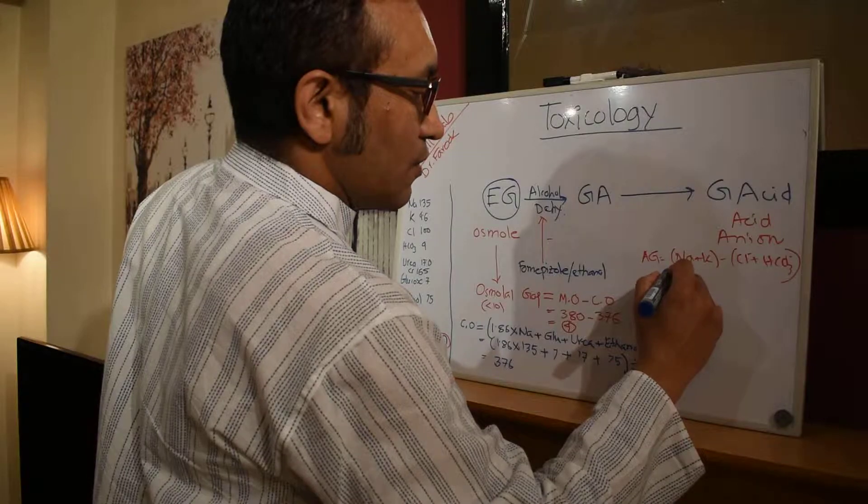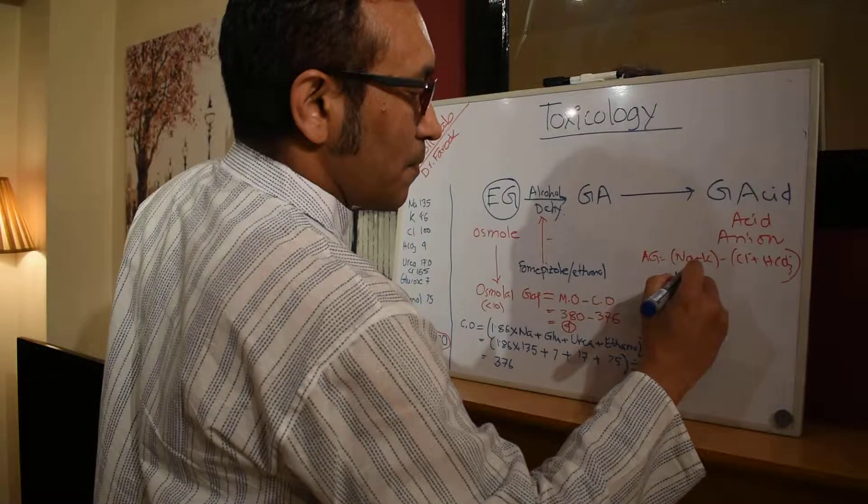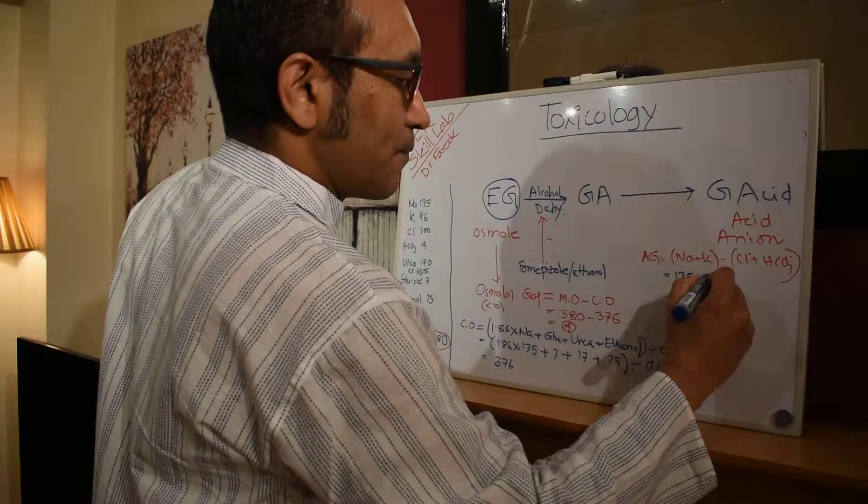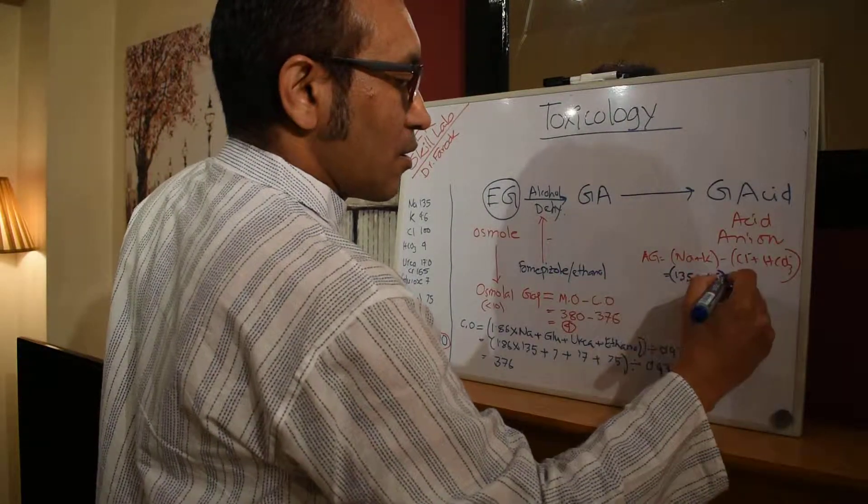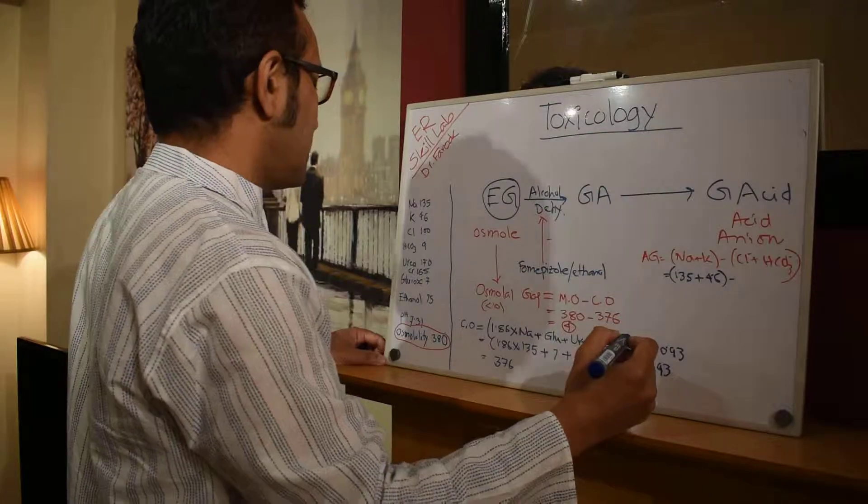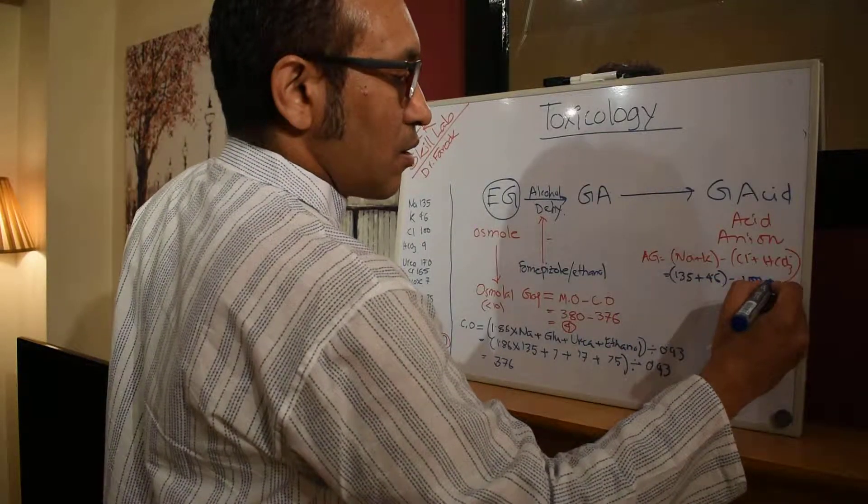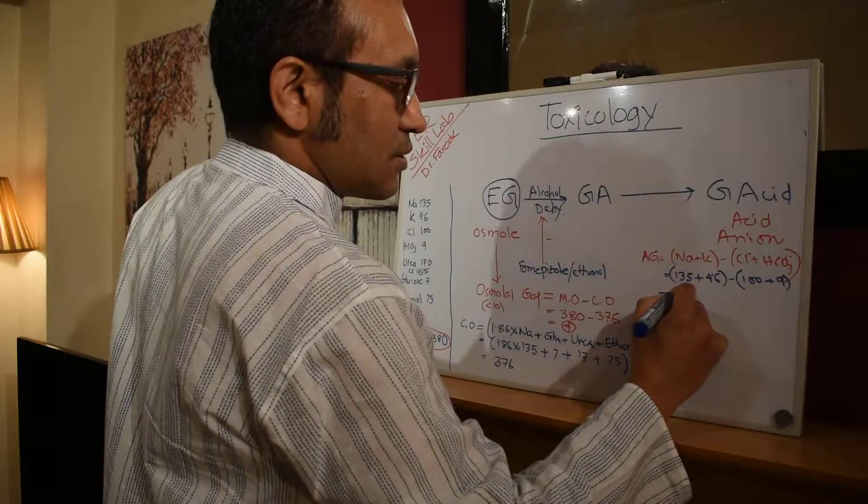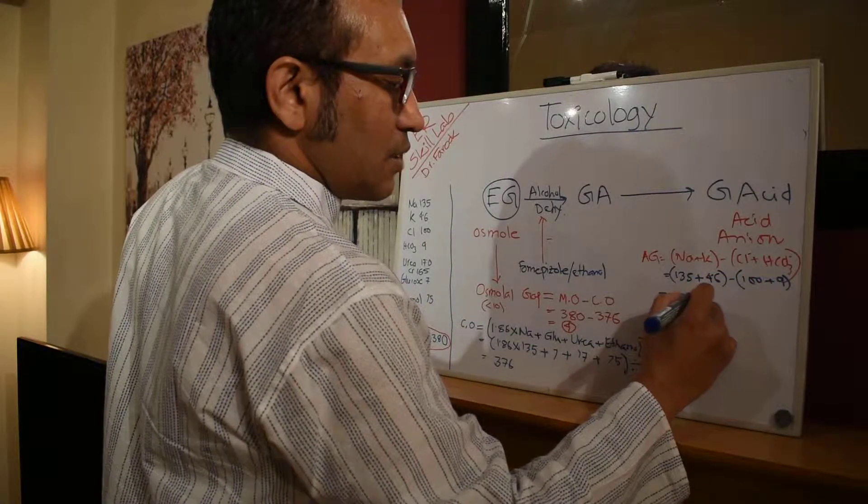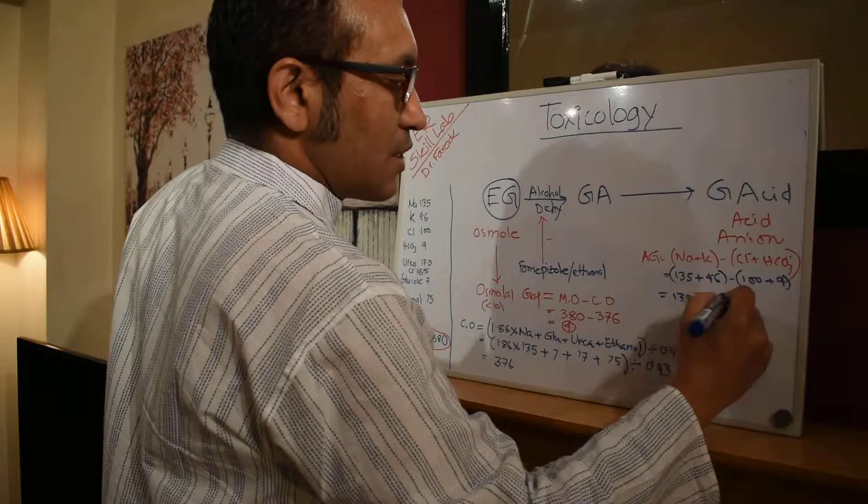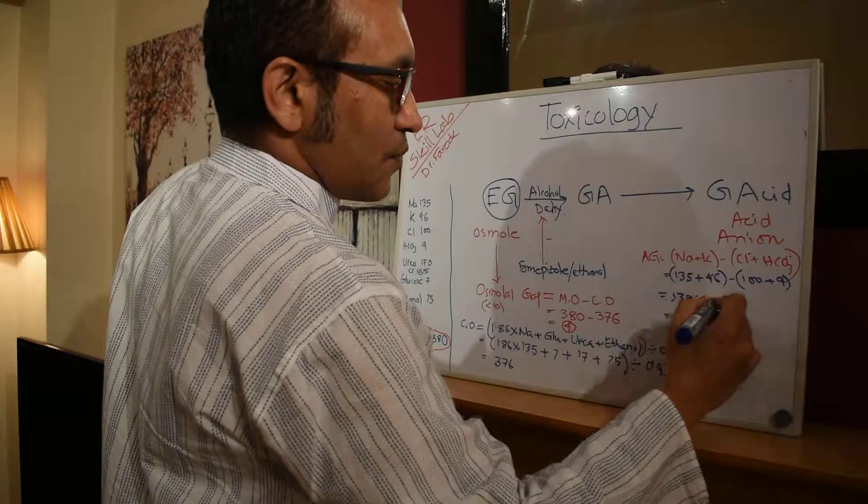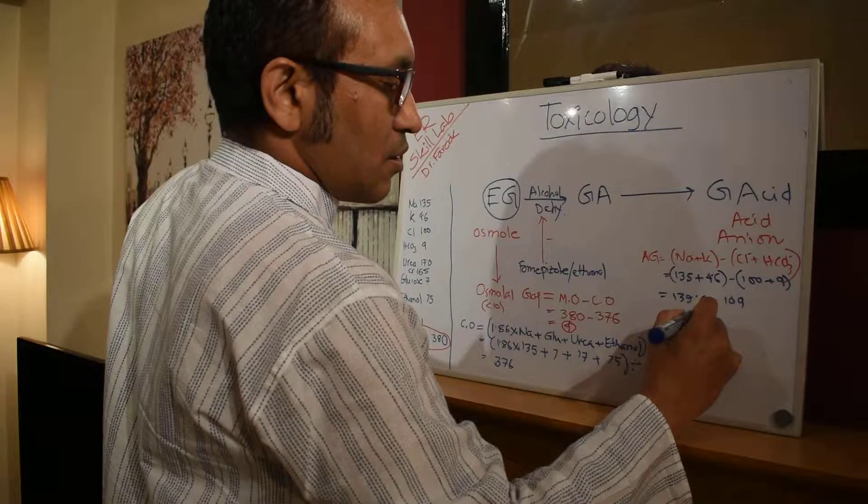So that's sodium is 135 plus potassium 4.6 minus chloride 100 and bicarbonate is 9. So that's 139.6 minus 109 is 30.6.